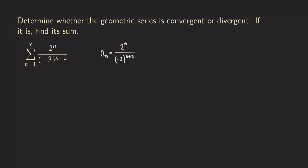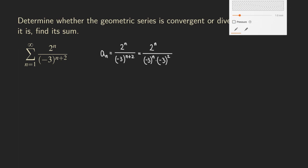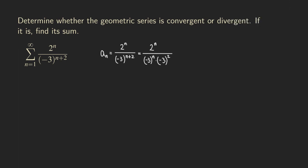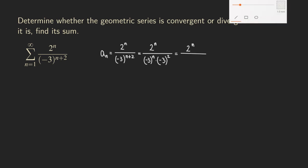What you want to do right now is to break up the negative 3 to the n plus 2, so that it will become negative 3 to the n, and then times negative 3 to the second power. So let's continue. The next step is to simplify this. Then we are going to get 2 to the n, and then we have negative 3 to the n.